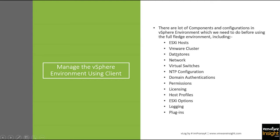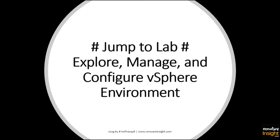Once your ESXi host is ready, you will need to perform these configurations: create a VMware cluster, create datastores in your vSphere environment to store virtual machines, create networking — either standard switches or distributed switches — and then configure NTP at the ESXi host level, set up domain authentication, verify permissions, apply licensing, configure host profiles, ESXi options, logging, and plugins. These are all the things you need to do once your host is ready.